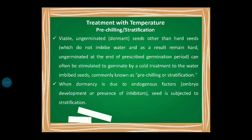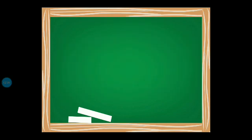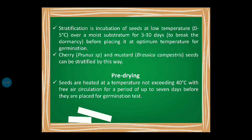When the dormancy is because of endogenous factors — we were previously talking about the seed coat and exogenous factors — pre-chilling and stratification address endogenous factors, meaning inhibitors. The seeds are subjected to stratification. Stratification is incubation of seeds at low temperature of 0 to 5 degrees Celsius over a moist substratum for 3 to 10 days, to break dormancy before placing at optimum temperature for germination.